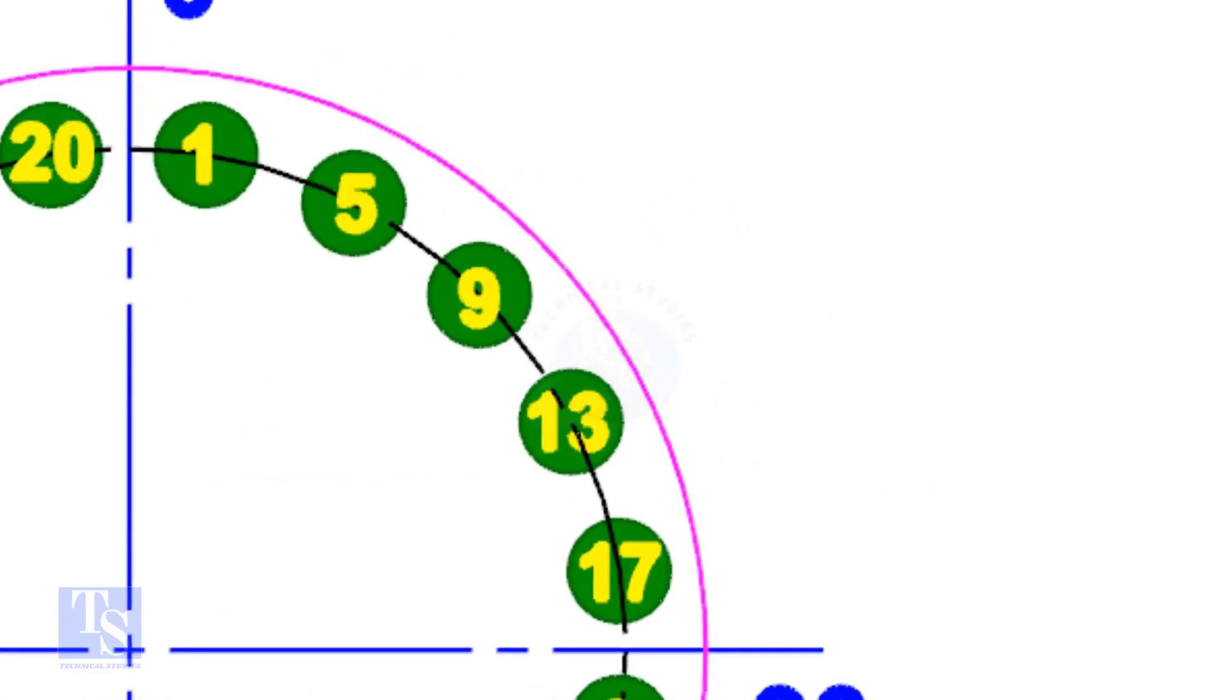Let me show you something now. See any quarter of the circle. The difference between any two adjacent numbers is 4.